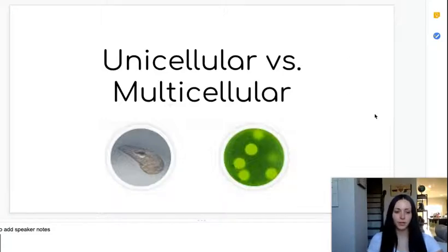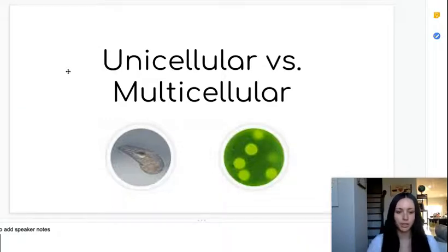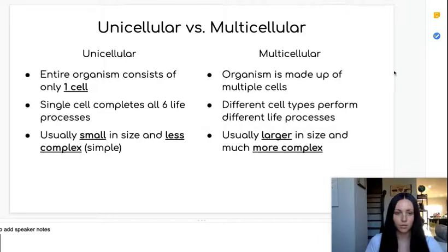Today we are going to be discussing what unicellular and multicellular organisms are and discussing the differences between the two. If you think about the prefixes of each of these words — uni and multi — and then the base word cellular, we can see that we're talking about the amount or the number of cells in an organism. So let's talk about what a unicellular organism is versus a multicellular.